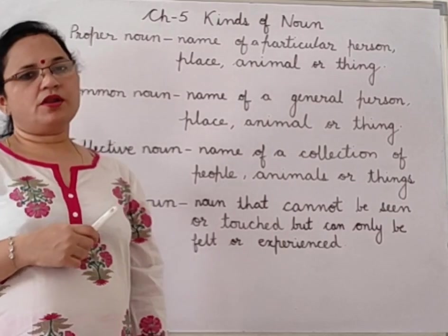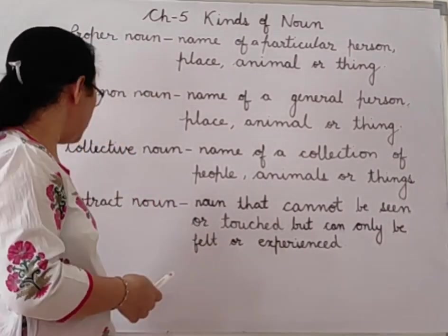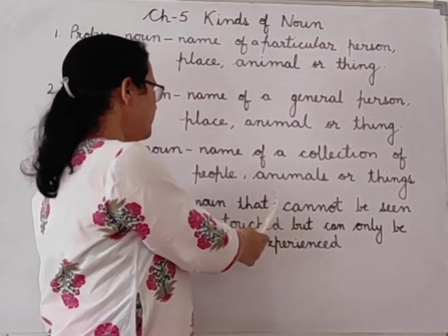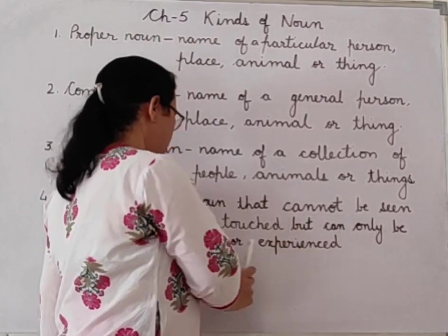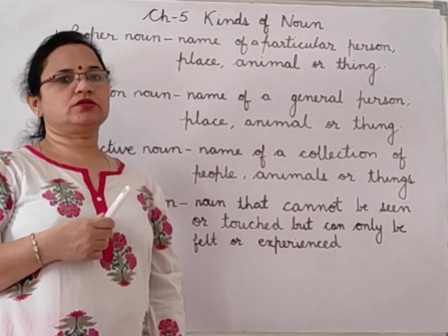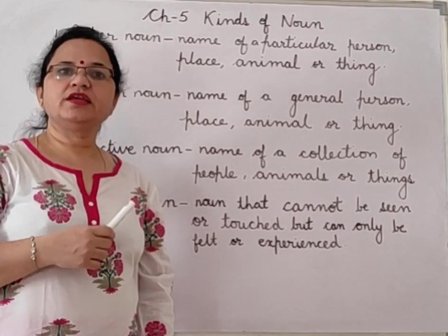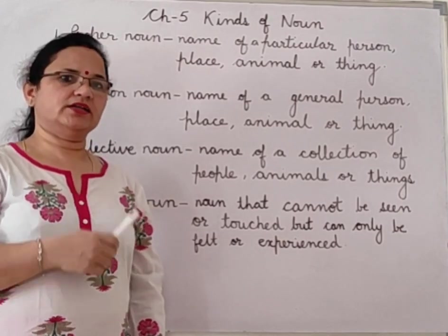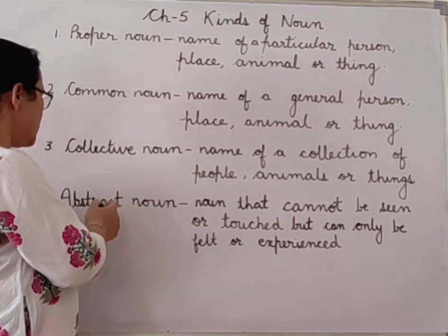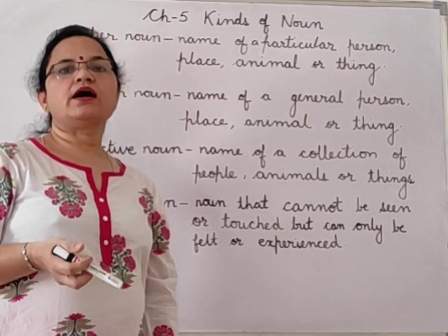There are so many collective nouns given in your book. Next is abstract noun. Abstract noun cannot be seen, cannot be touched, but can only be felt or experienced. The noun which you cannot see, cannot touch — you can only feel it. That also comes in the category of noun, and it is called abstract noun. For example: joy, happiness.